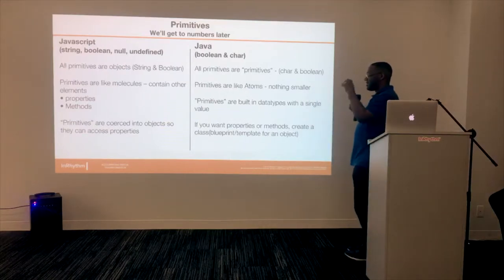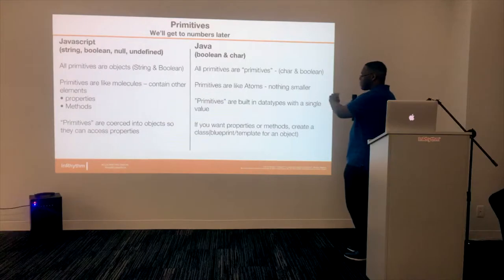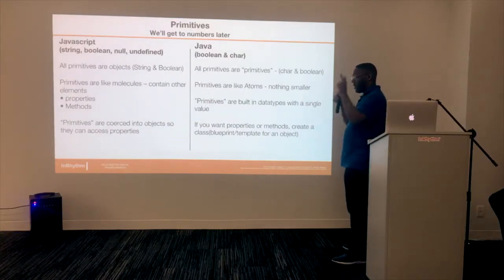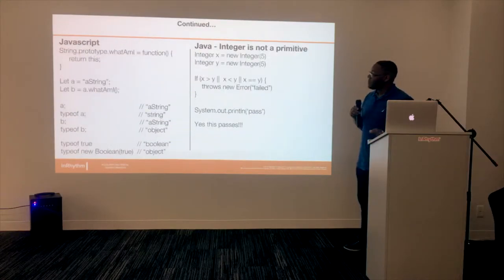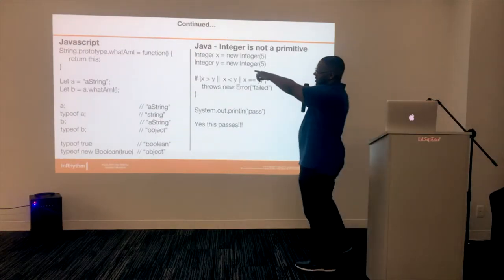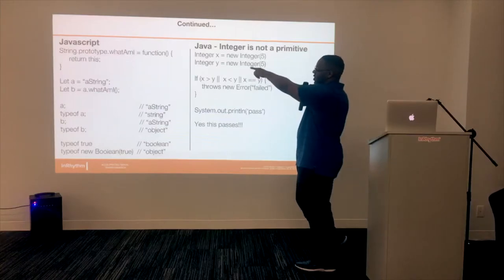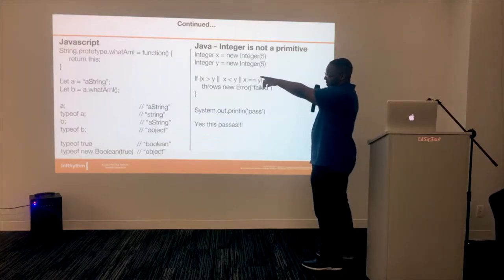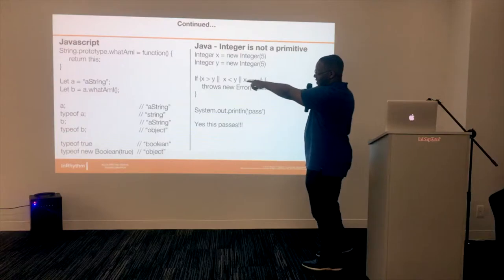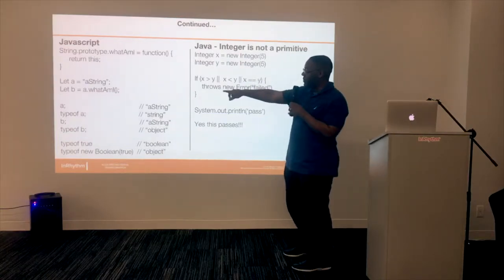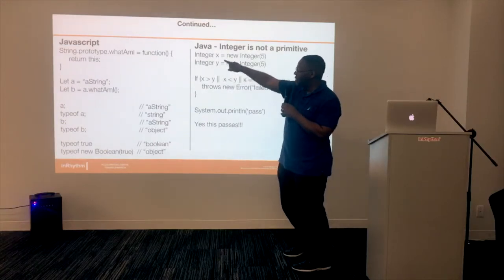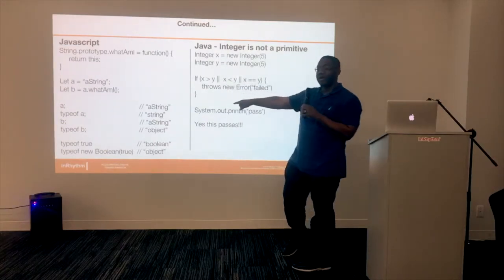In Java, primitives are built-in data types with a single value. If you want to have properties and methods, you have to create a class, which is a template for the objects. For instance, if you add a function onto the prototype of a string and initialize B with A using that prototype, if you check the type of A it would be a string, but if you check B — because it was initialized with the function — it will actually be coerced into an object.